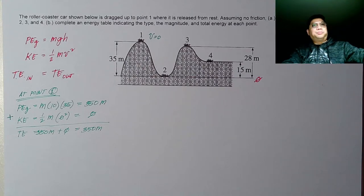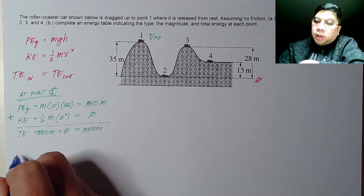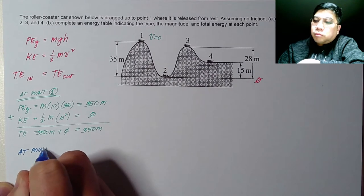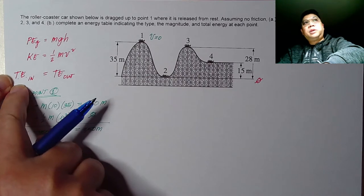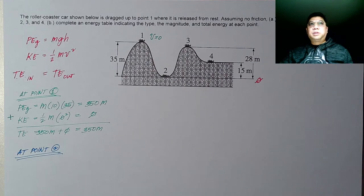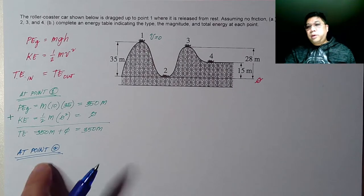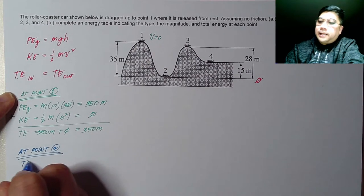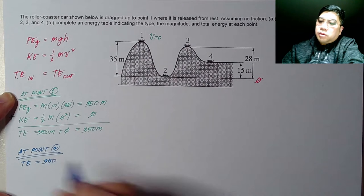Now let's proceed to point two. Since there's no friction, we can assume that the total energy remains the same. At point two, the total energy is therefore also 350m. Now what is the potential energy? The height at point two is zero — it's at the reference level.